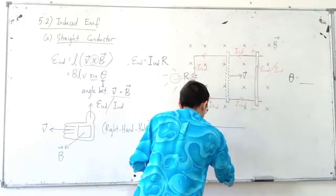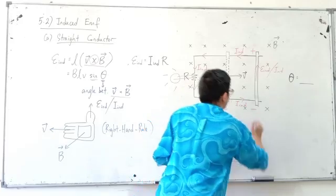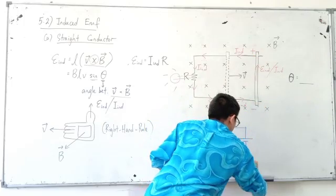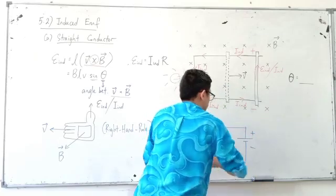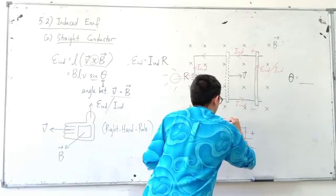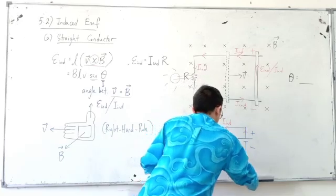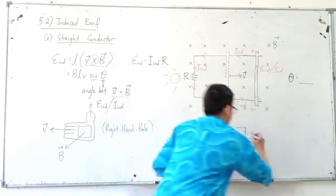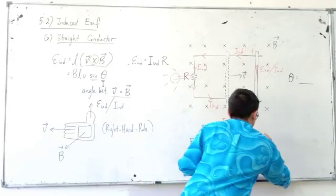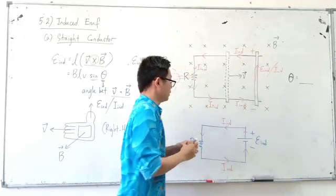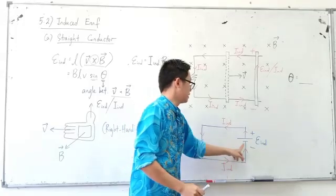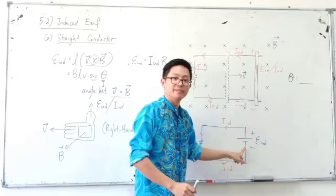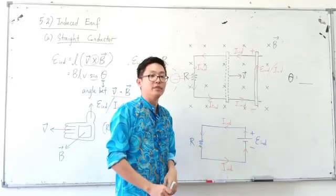It is something like this: the straight conductor acts as a battery with a positive terminal and a negative terminal connected to a resistor. The current comes out from the positive terminal, goes through the circuit, and returns to the negative terminal. The induced current flows in the external circuit, and the straight conductor acts as the source of induced EMF — like a temporary battery.